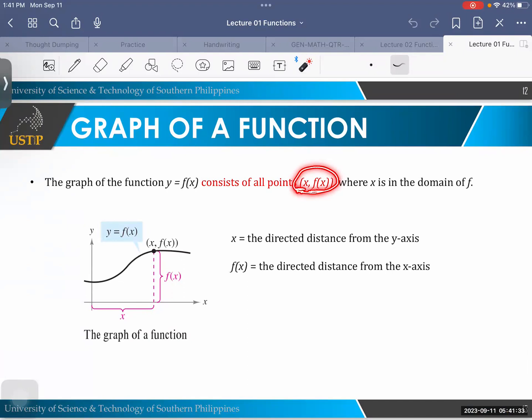That is the ordered pair that exists on the graph of the function. So another way to check if you correctly got f of x, then you have to check the function if that point appears on the graph, okay?